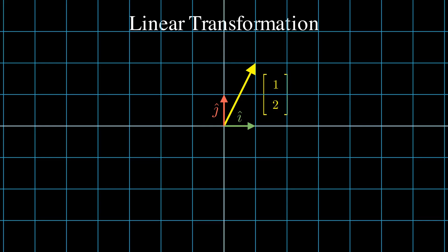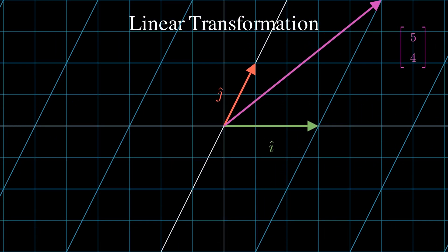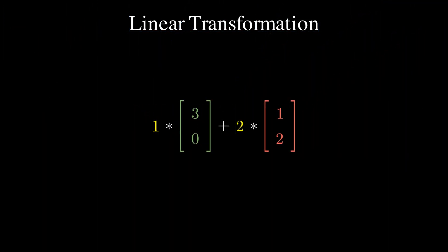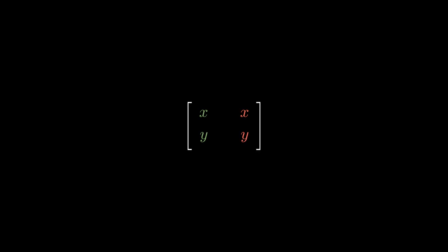All we need to do is apply the transformation and then multiply the original vector one, two by where i-hat and j-hat ended up. Let's say i-hat and j-hat end up at three, zero and one, two respectively. We multiply one times the transformed i-hat — three, zero — then add two times the transformed j-hat — one, two. That's three, zero plus two, four, giving us a final vector of five, four. This means that for any linear transformation, a vector can be entirely described using just the coordinates of where i-hat and j-hat land.